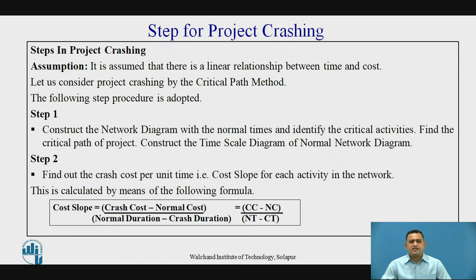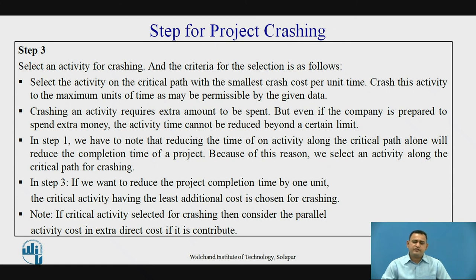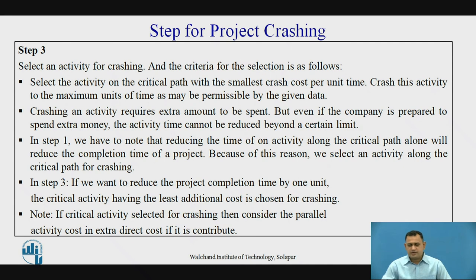Step 2: find out the crash cost per unit time — that is the cost slope of each activity in the network diagram — calculated using the formula: Cost Slope = (Crash Cost − Normal Cost) / (Normal Duration − Crash Duration). Step 3: once we get the cost slope of each activity, select the activity with the lowest cost slope per unit time. Reducing the duration of an activity means assigning extra resources, which means extra expenditure. Keep in mind the activity can only be crashed up to its crash time — we cannot reduce activity duration below the crash time.